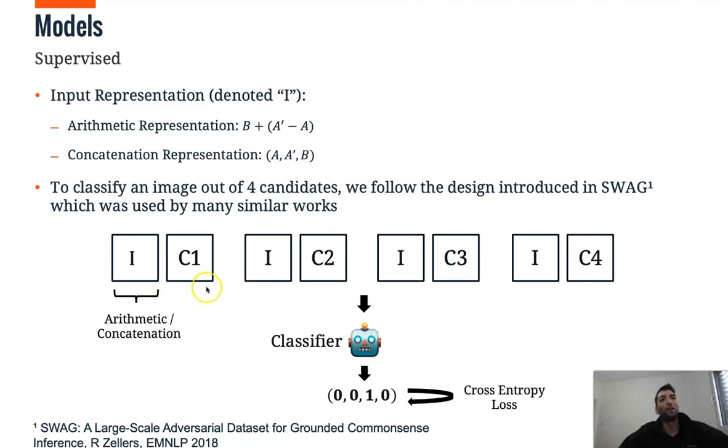And we follow a common design where we just take the input, concatenate it to each of the candidates and train a classifier on top of this representation to find the correct answer with cross-entropy loss.